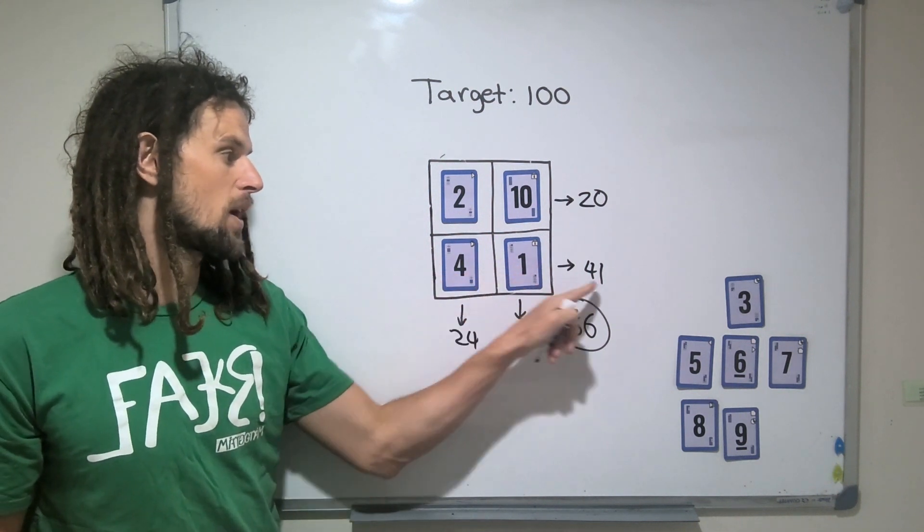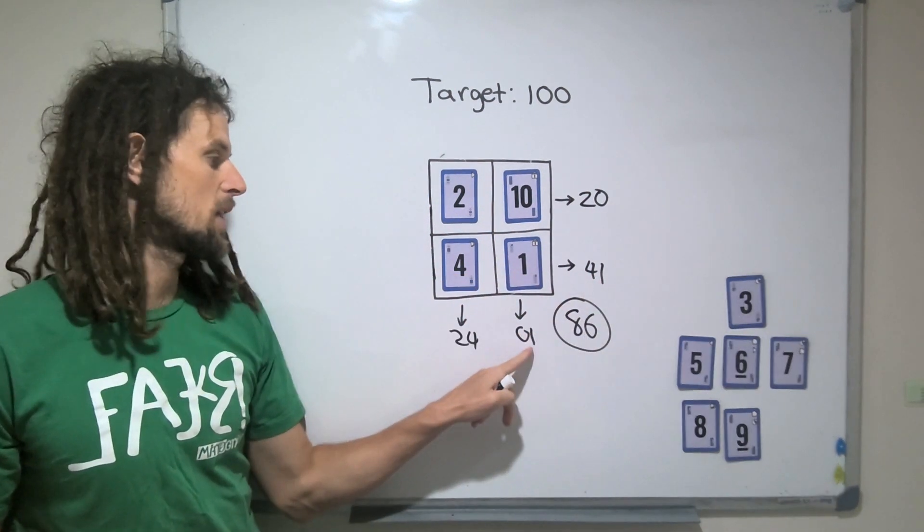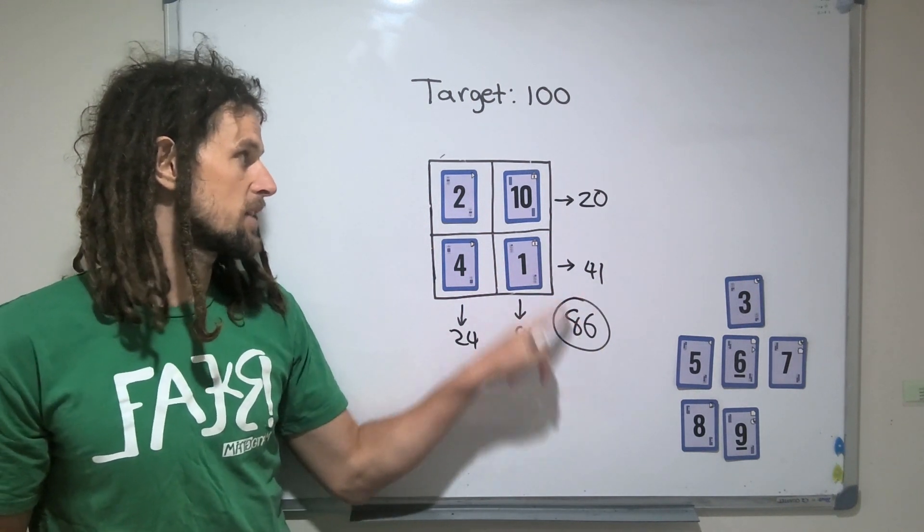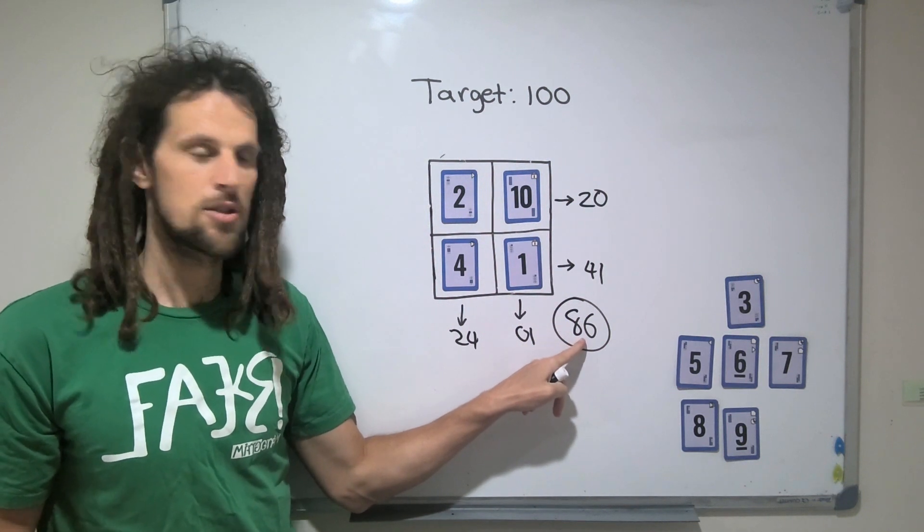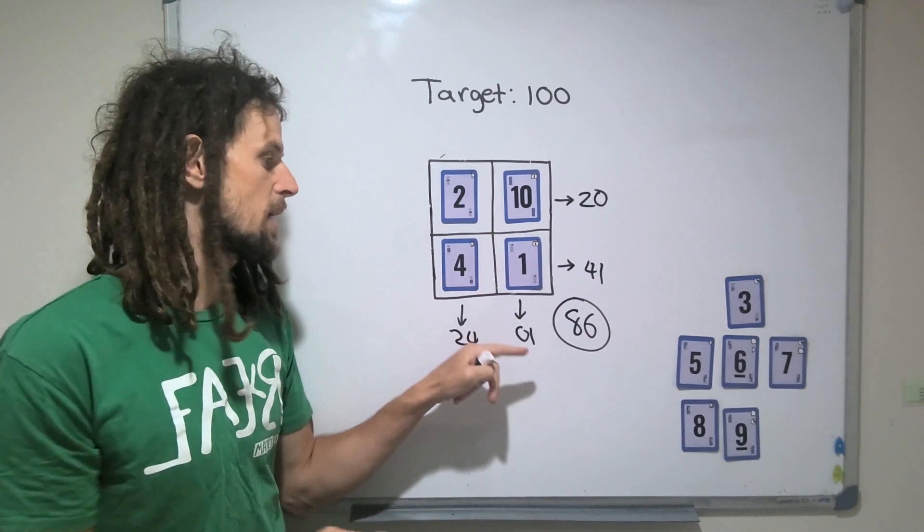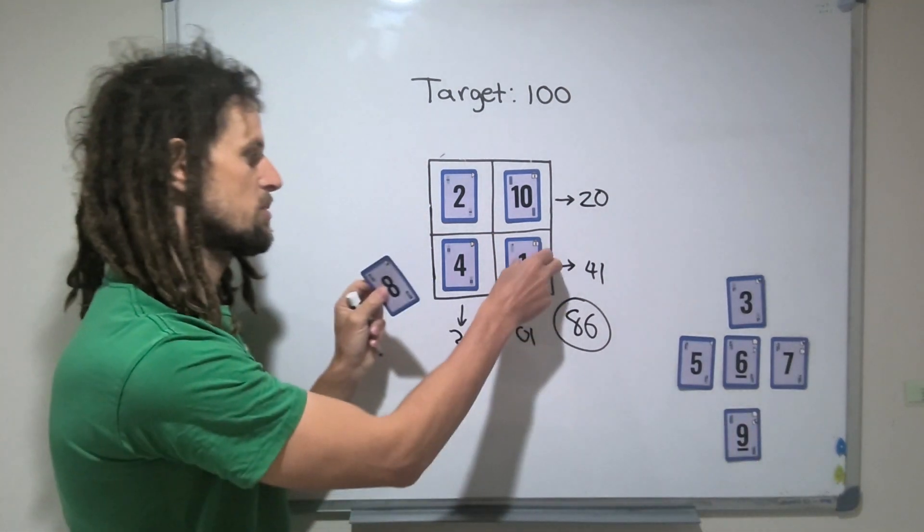This number is being used in the ones column here and the ones column here, so it's having two effects. We need to raise that number, or the total, by 14. Which means if we increase this number, the value of this number by 7 and make it an 8, it makes it 7 bigger.